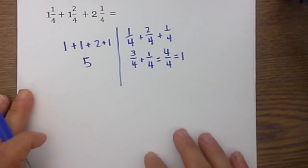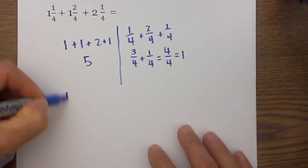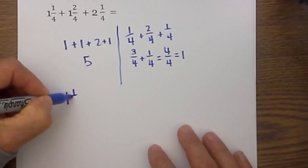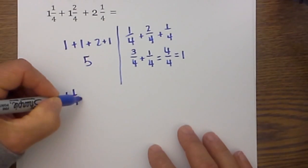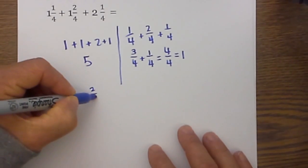That's the first technique. The second technique is you can convert them to an improper fraction. And so I will do that quickly.